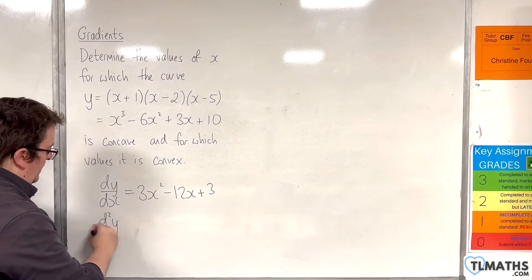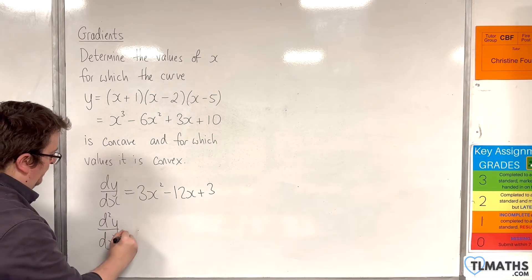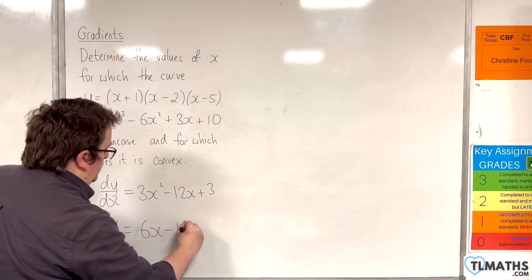and d²y/dx², the second derivative, is going to be 6x - 12.